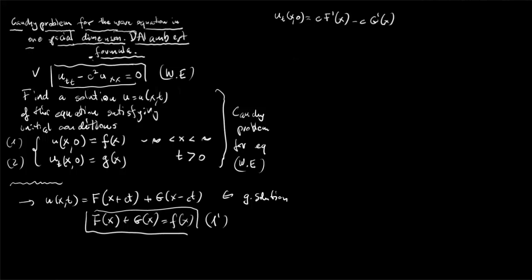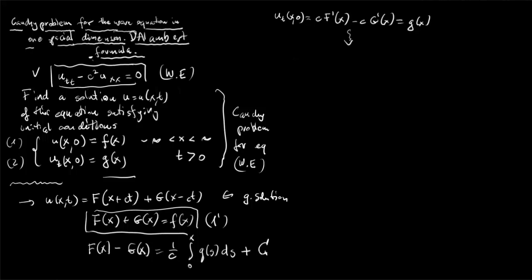According to condition 2, this must equal g(x). This is a differential equation for capital F and capital G, but we can integrate it easily, obtaining (1/c) times the integral from 0 to x of g(s) ds, plus perhaps a constant — call it condition 2 prime. So conditions 1 and 2 for our solution imply conditions on functions capital F and capital G.